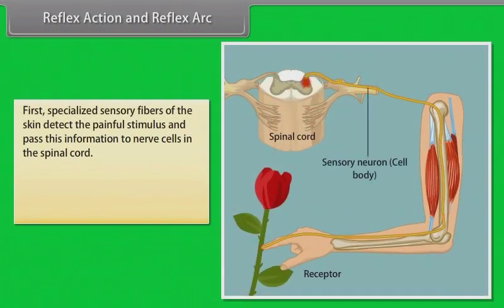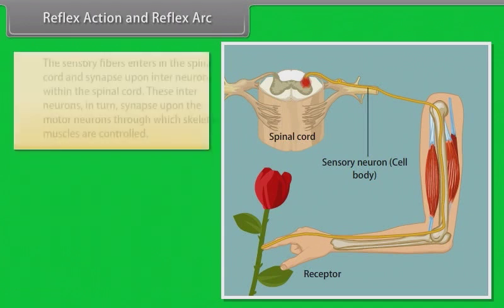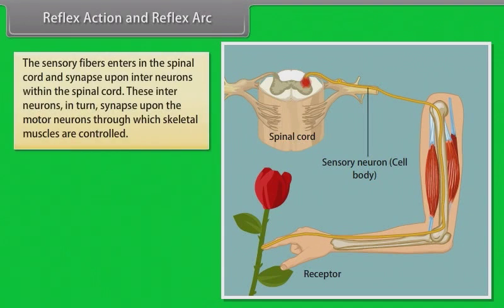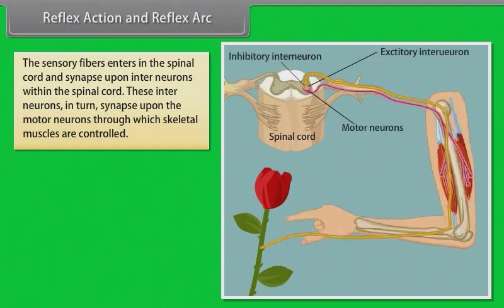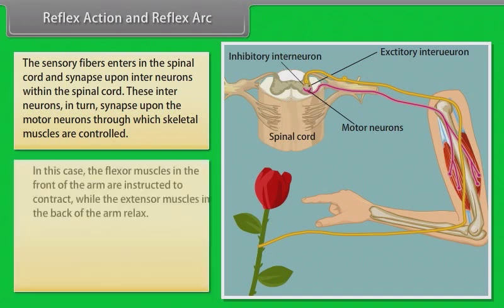Specialized sensory fibers of the skin detect a painful stimulus and pass this information to nerve cells in the spinal cord. The information is carried by a single sensory neuron without any intervening synaptic connections. The sensory fibers enter the spinal cord and synapse upon interneurons within the spinal cord, which in turn synapse upon the motor neurons through which skeletal muscles are controlled.